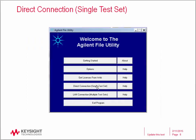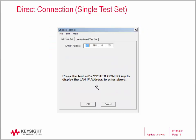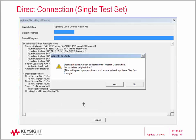Now click the Direct Connection Single Test Set button. Enter in the IP address of your test set and click the OK button. When the software connects to the test set, it will see that a new license is in the directory. When you see this message, your license file has been successfully installed in the test set.